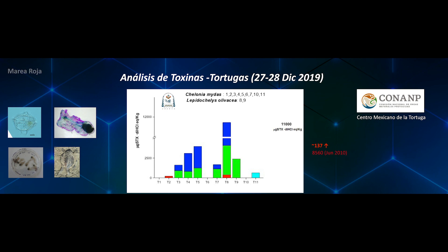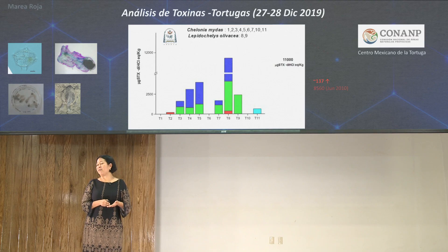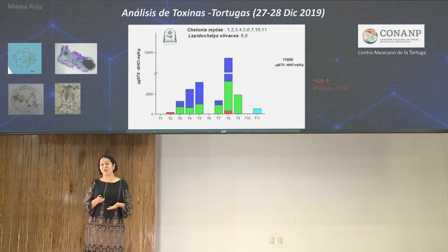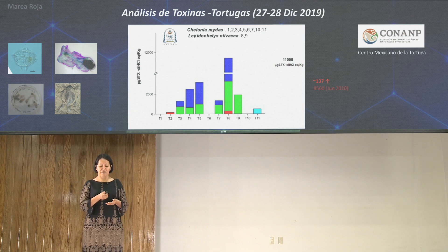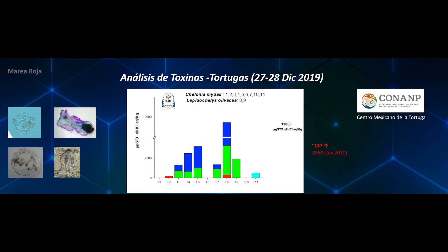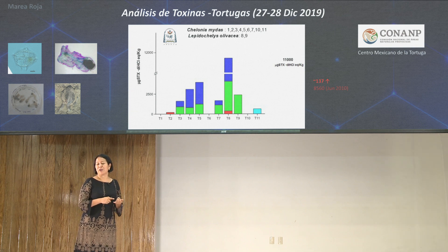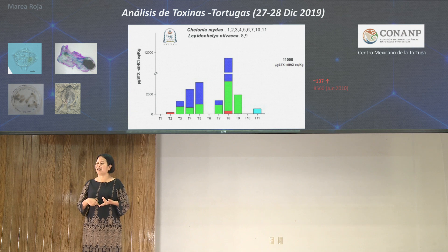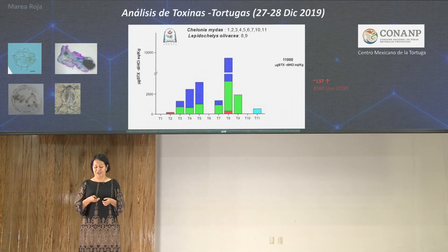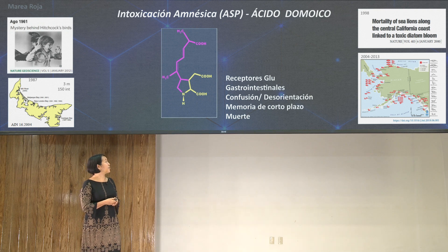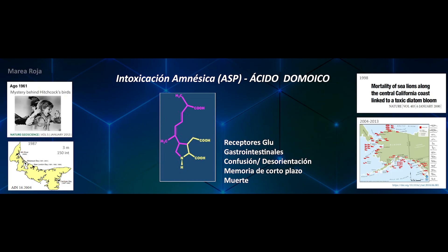In the December 2019 sea turtle mortality event, samples collected by the Centro Mexicano de la Tortuga showed toxin concentrations up to 137 times above the safe limit for human consumption. This intoxication was due to accumulation of the dinoflagellate Pyrodinium bahamense through a tunicate normally present in the water column, which is consumed in large quantities by turtles. Varying concentrations among analyzed turtles reflect differences in duration of exposure, amount of toxin-vector organism consumed, and other unknown factors.